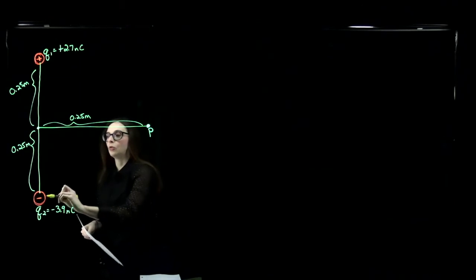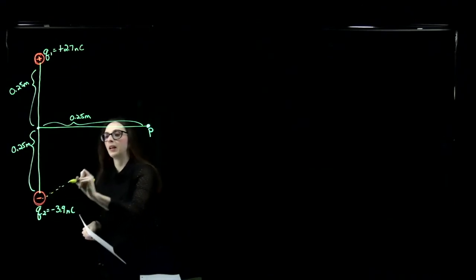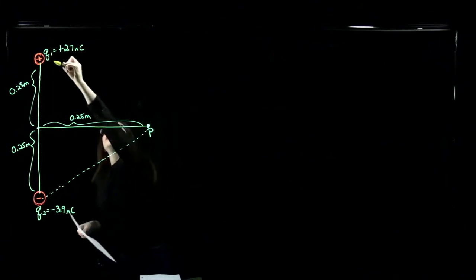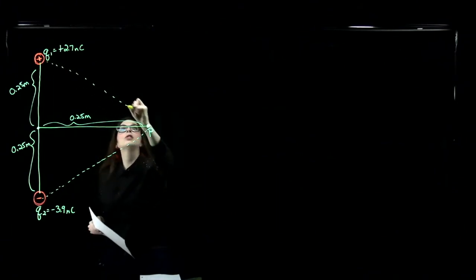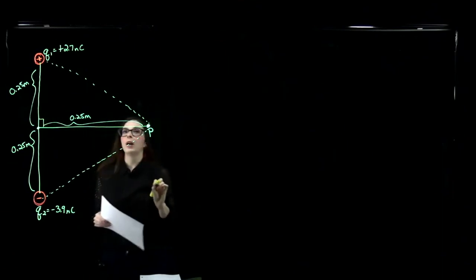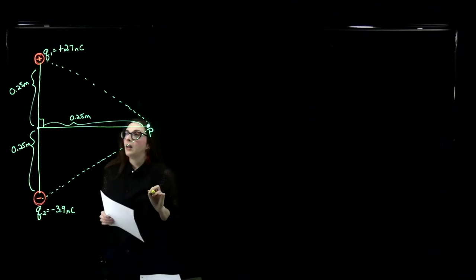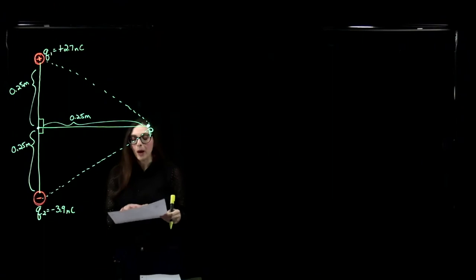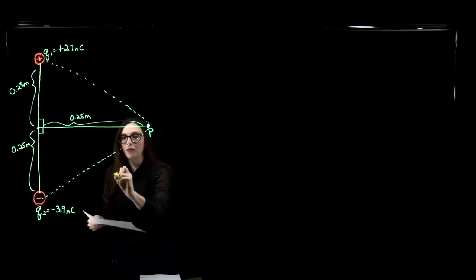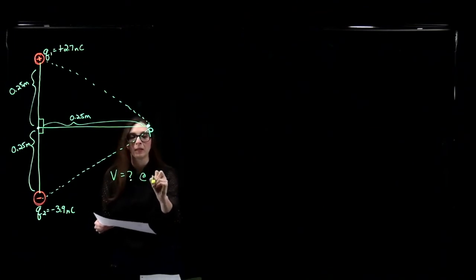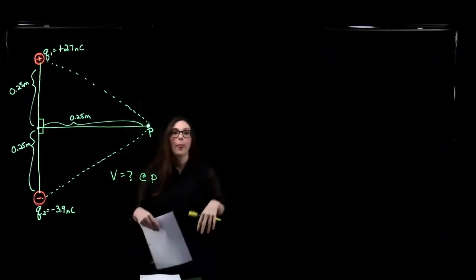I'm going to draw in a line from the charge to my point P. Both of these form right-angle triangles. The problem asks us for the voltage in volts at point P, which is the same thing as the electric potential.